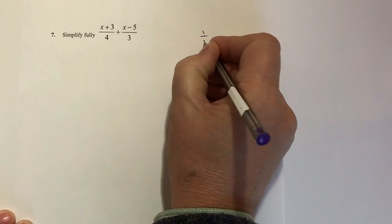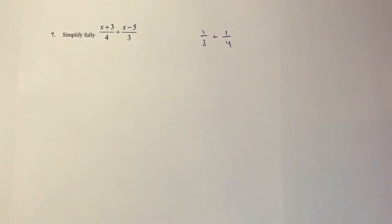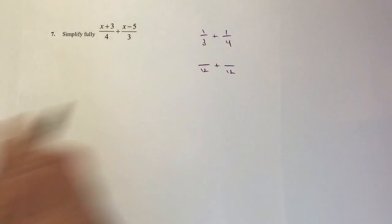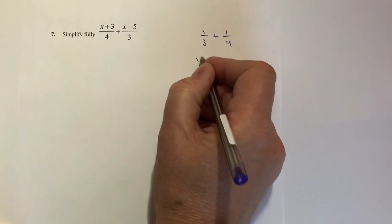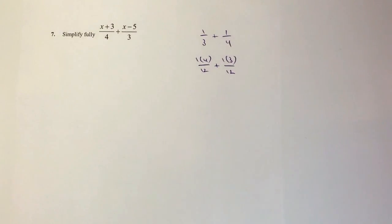For instance, if I want to add 1/3 plus 1/4, I would make sure both denominators are the same, in this case 12, and then I would multiply across. So I've got 1 times 4 and 1 times 3, and then I would work that out and add the two together.